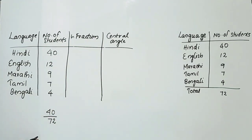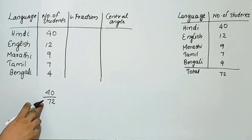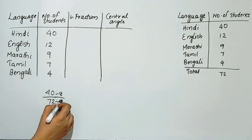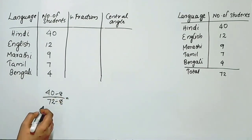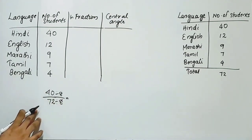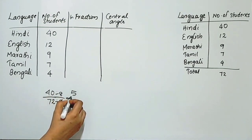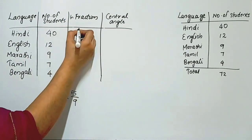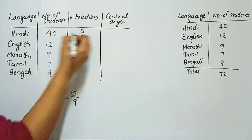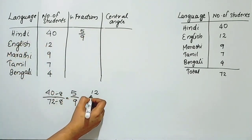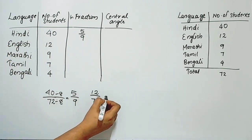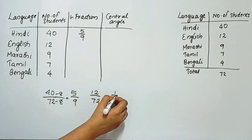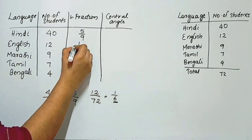Now we calculate the fractions in simplest form. For Hindi: 40 divided by 72. We simplify: 40 by 72 gives 5 by 9, since 9 into 8 is 72. For English: 12 divided by 72. Since 12 into 6 is 72, the fraction is 1 by 6.